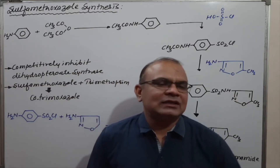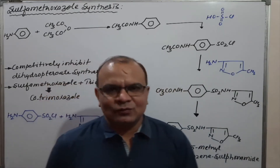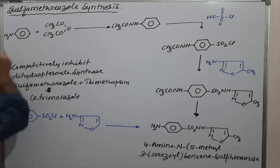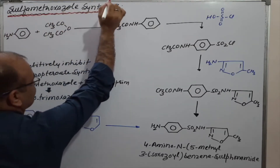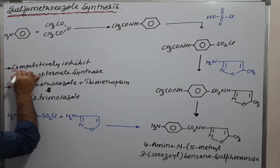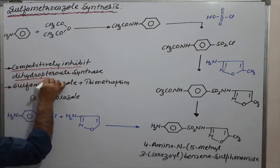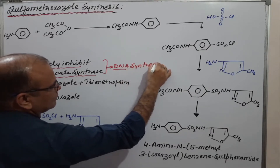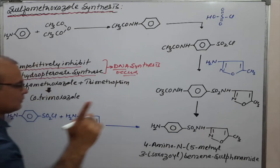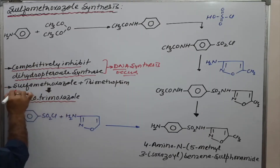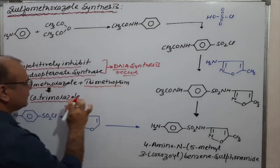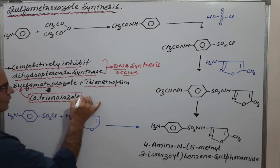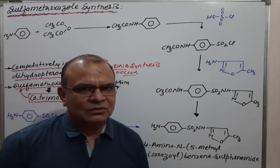Today we will discuss the synthesis of sulfamethoxazole, which belongs to the sulfonamide category. Sulfamethoxazole is a very important component — it competitively inhibits dihydropteroate synthesis, which leads to inhibition of DNA synthesis. It is also one of the components of co-trimoxazole, which is sulfamethoxazole and trimethoprim. The ratio of each component in co-trimoxazole will be discussed in a different lecture.